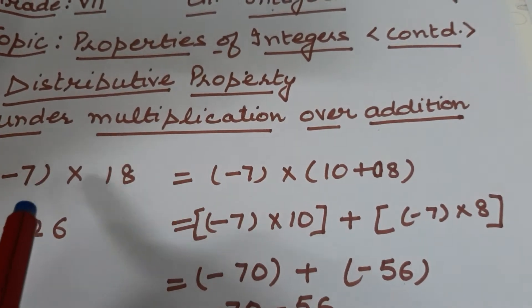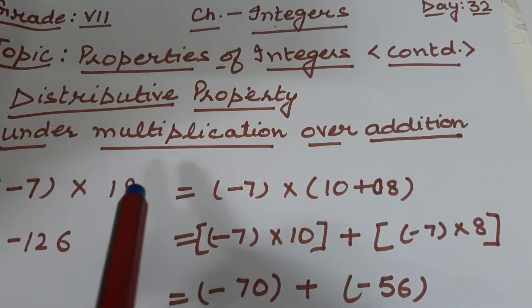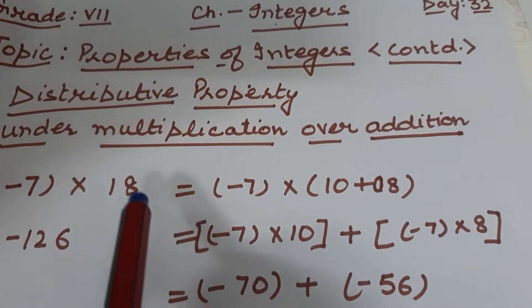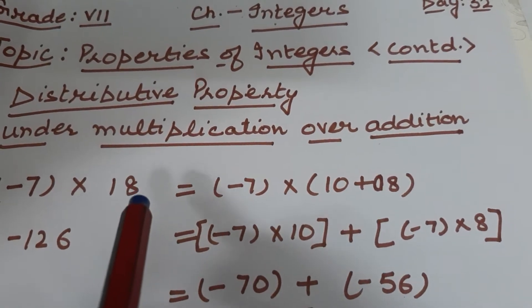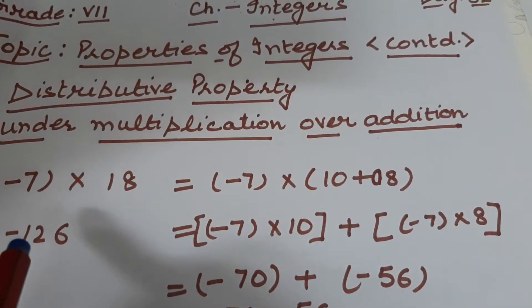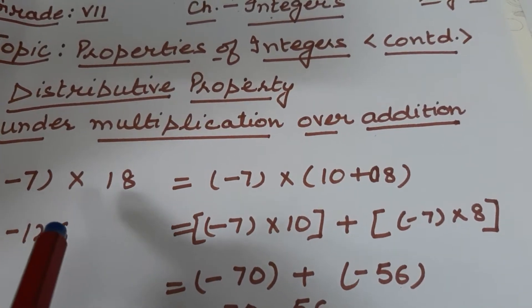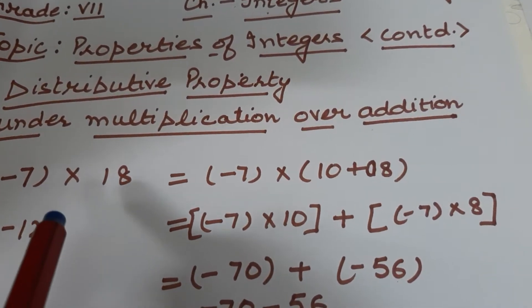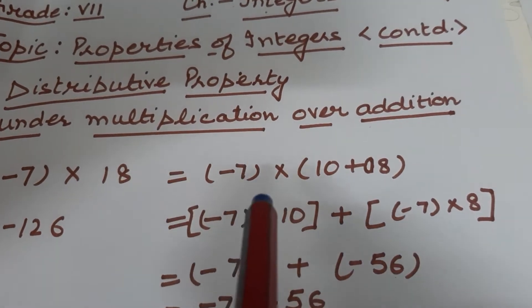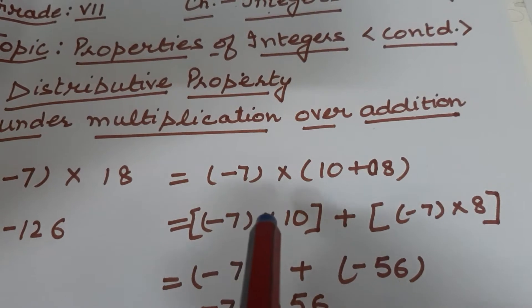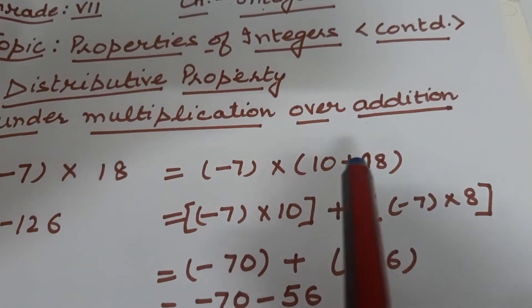So first, see minus 7 multiplied with 18. If we simply multiply these two integers, we are getting minus 126. How can we make it easier? We can break this 18. Now let's see. So minus 7 multiplied with 18 can be written as minus 7 times (10 plus 8).